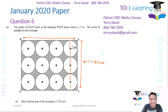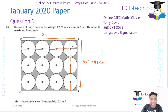If we look at the other dimension, counting the radii: 1, 2, 3, 4, 5, 6, 7, 8. So this length here is going to be 8 multiplied by 7, which is 56 cm.